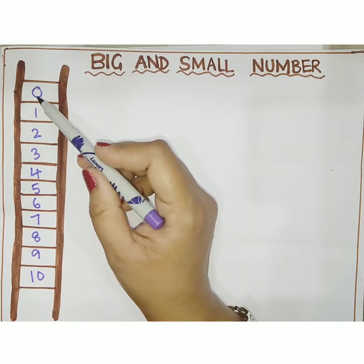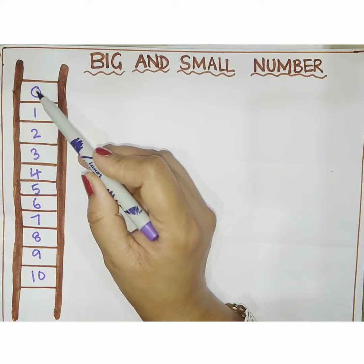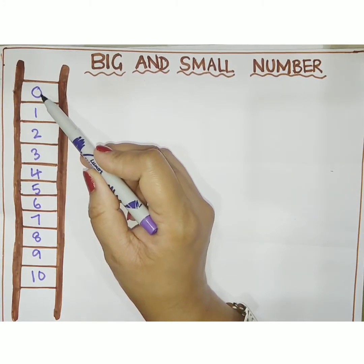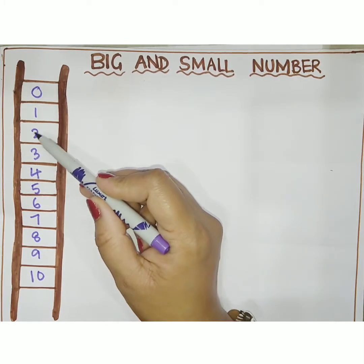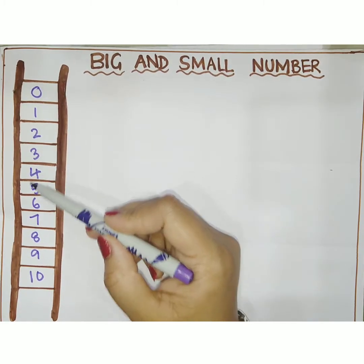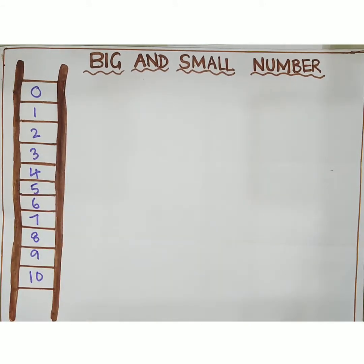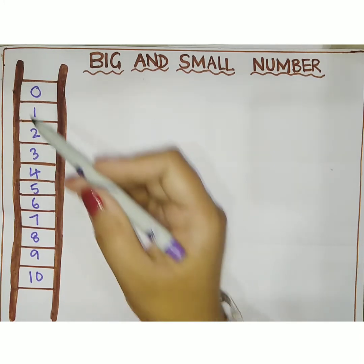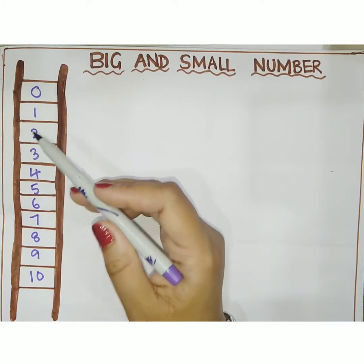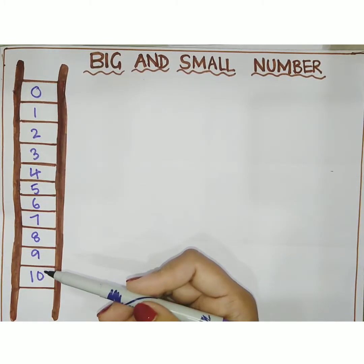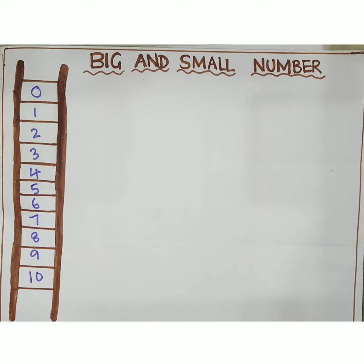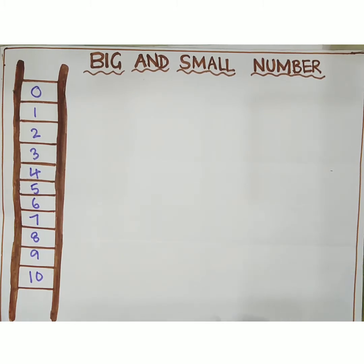We have to make the child understand that 0 is the smallest number, and as we move forward with each step, the number is increasing. When we have to compare between any two given numbers, the number which comes first on the number line is the small number, and the number which comes later is the big number. With the help of a few examples, I will explain this.